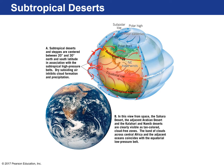As the air sinks, it moves back along the surface, warms up, picks up moisture again, and rises — creating a convection cell. These are the two convection cells from the equator to the Tropics of Cancer and Capricorn. From space, astronauts can point out those desert bands — and that's because of that subsiding air.